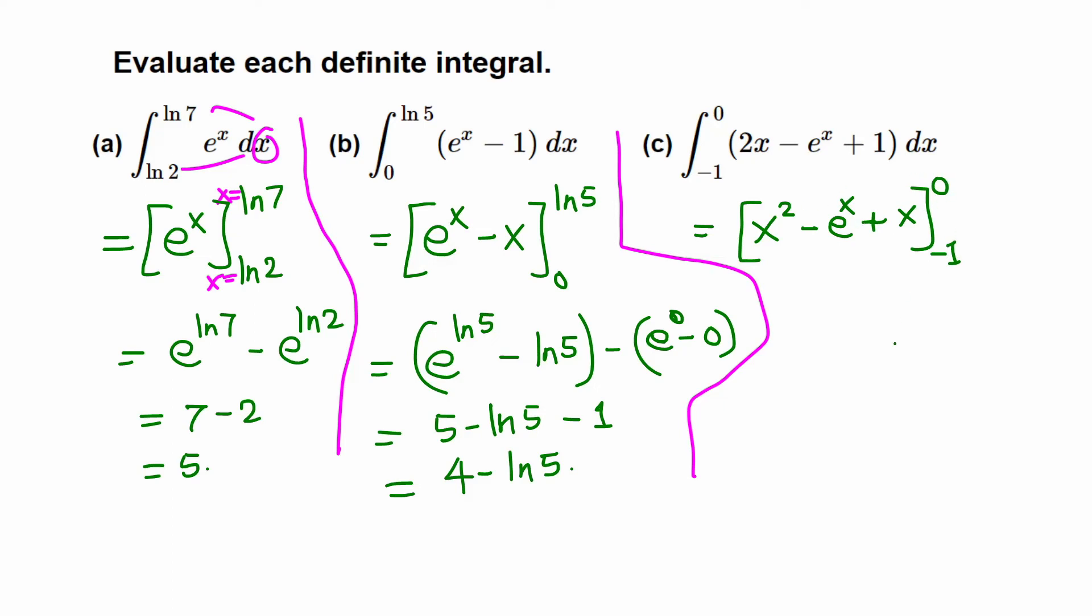Replace x throughout by 0 first - that's the upper limit. Then minus replace x by the lower limit, negative 1. So 0 squared is 0, minus e raised to 0 is 1, plus 0. So I replace x by 0, then by the fundamental theorem of calculus, that's the negative.